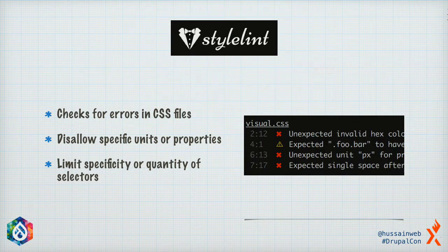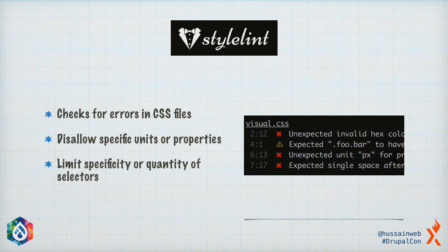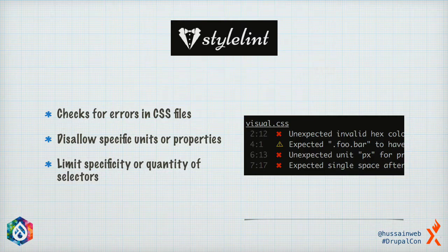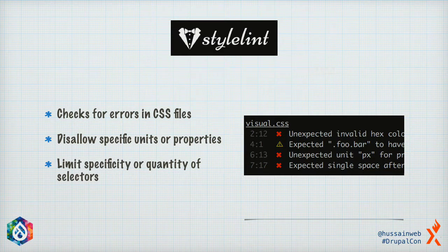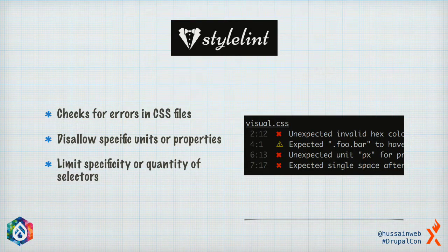Then there's Stylelint — all the tools we saw so far were for PHP. Stylelint does the similar job for CSS. It checks for things like are you using invalid properties, and as a developer or team lead you can say you don't want to allow certain units in your CSS files. You can also control things like the specificity of selectors — if you're using SMACSS, you don't want to increase specificity beyond a certain limit. And ESLint does similar checks for JavaScript — the same kinds of logical and static checks, but for JavaScript.